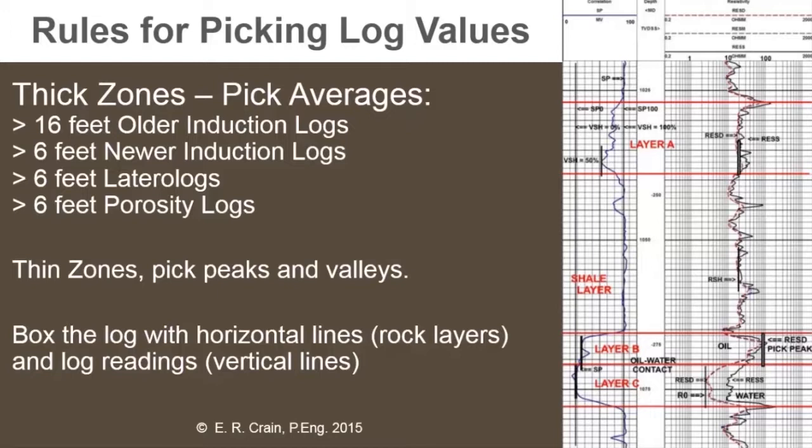So we have different rules for different log curves. In the case of porosity logs, if it's more than six feet thick, certainly take an average. If it's less than six feet thick, then you probably want to pick peaks and valleys. The peak would be a high value if you're trying to pick a high value, and a valley would be a low value. My rule is simple: if you're picking a high value, pick high; if you're picking a low value, pick low. That's for thin beds. In the case of thick beds, take an average.